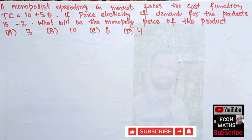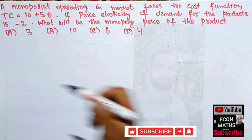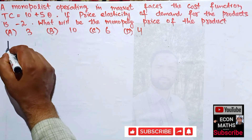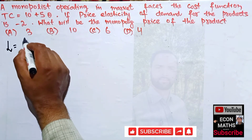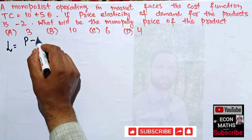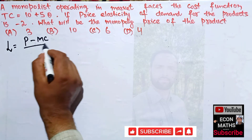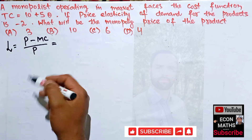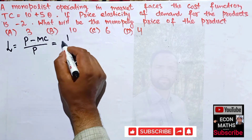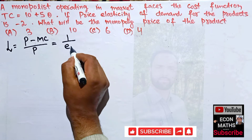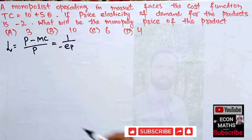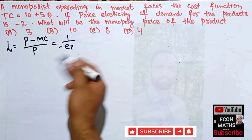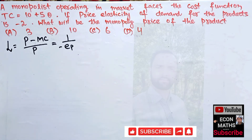To find the monopoly price we will use the Lerner's Index of degree of monopoly. Lerner's Index is given by L = (P - MC) / P, which is equal to the reciprocal of the price elasticity of demand. We will use this formula to find the monopoly price.